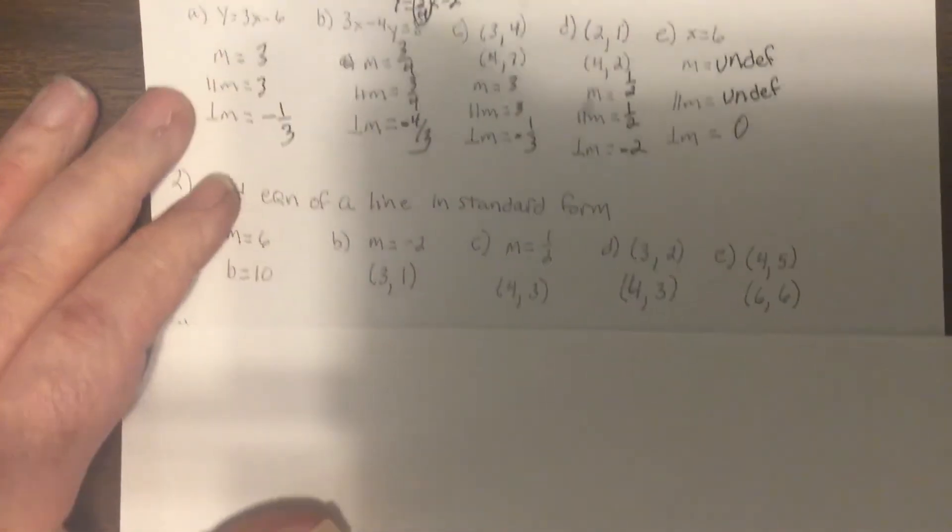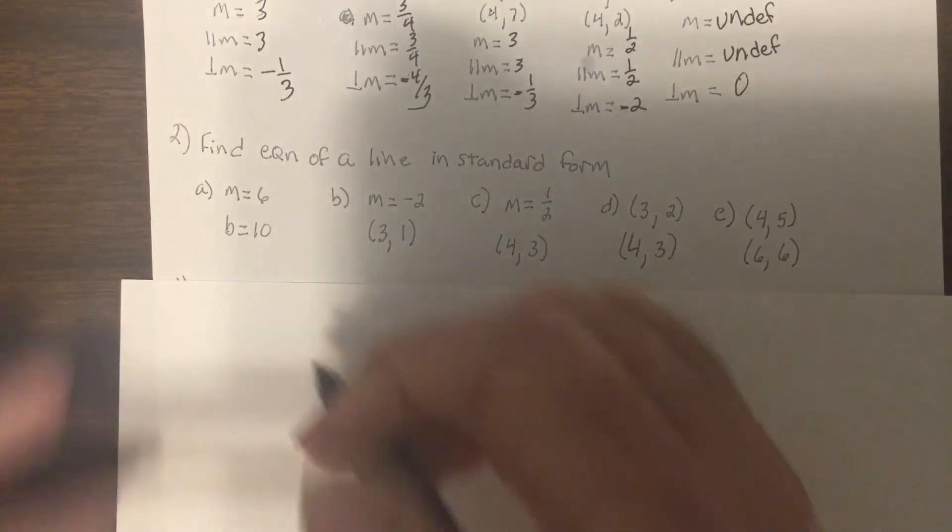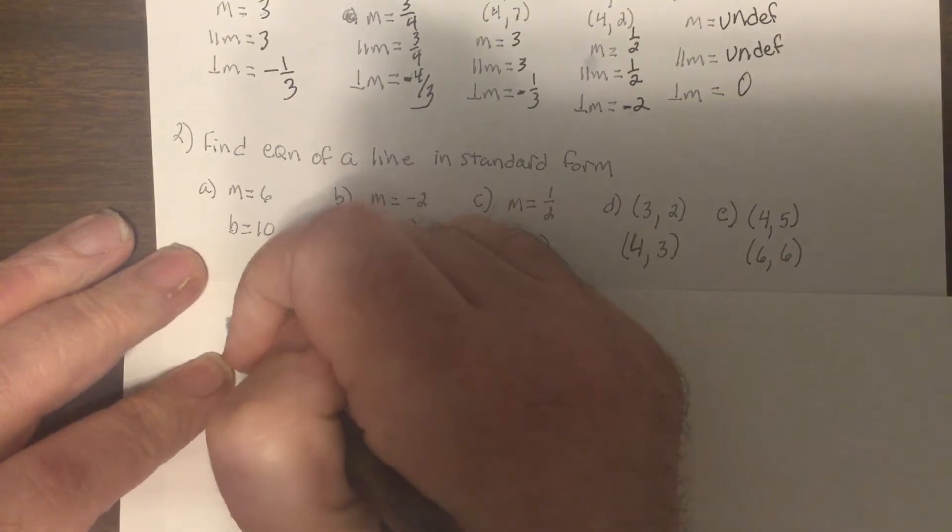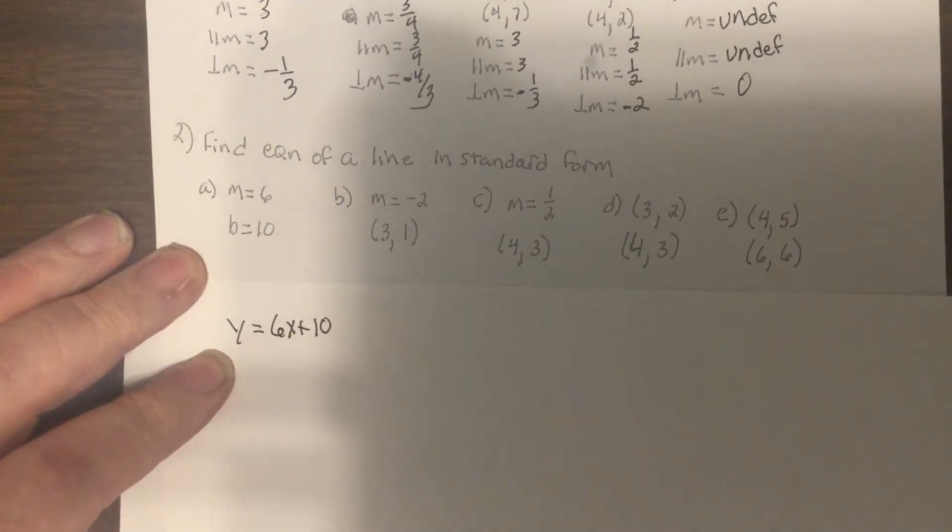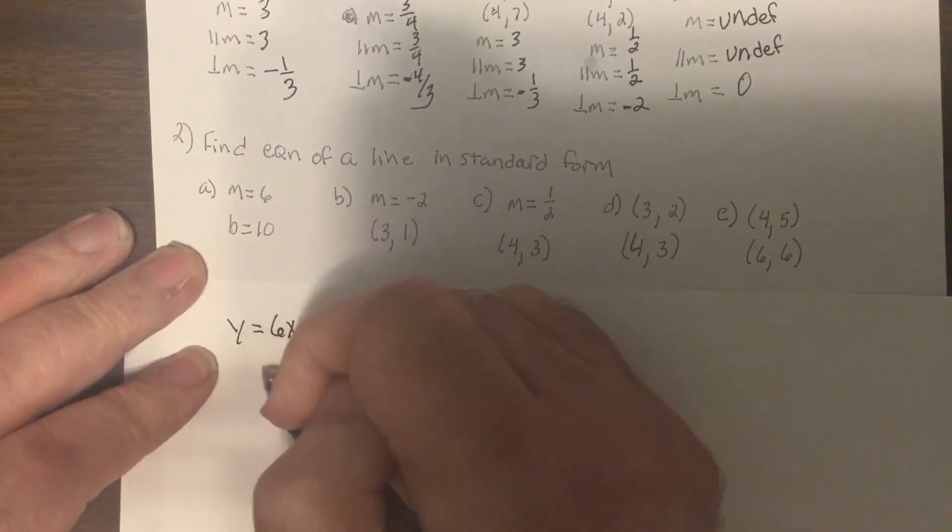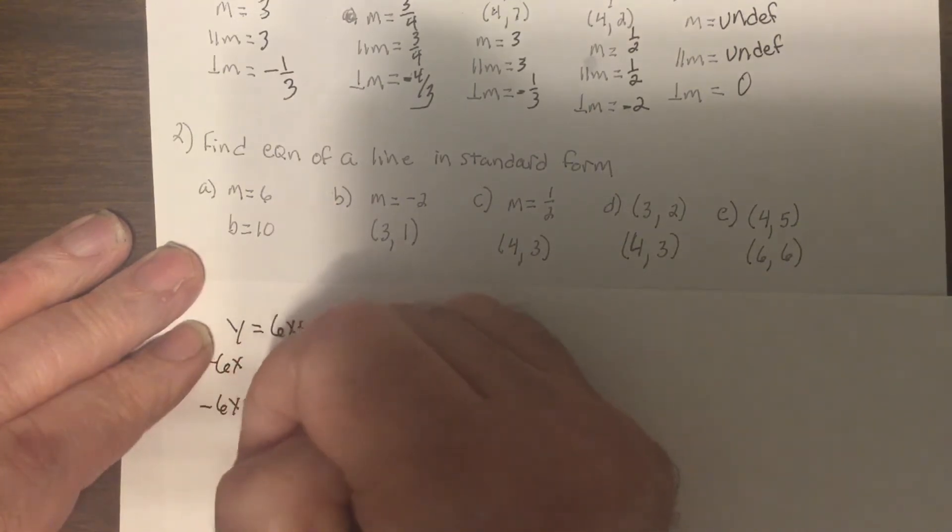Now, find the equation of a line in standard form. So if we're given the slope and y-intercept, you use slope-intercept. Oh my goodness, Mr. Murphy, that makes so much sense. So I'd have y equals 6x plus 10. Now, I want it in standard form. So I got to get x and y on one side, so I'd subtract 6x. So it'd be minus 6x plus y equals 10.